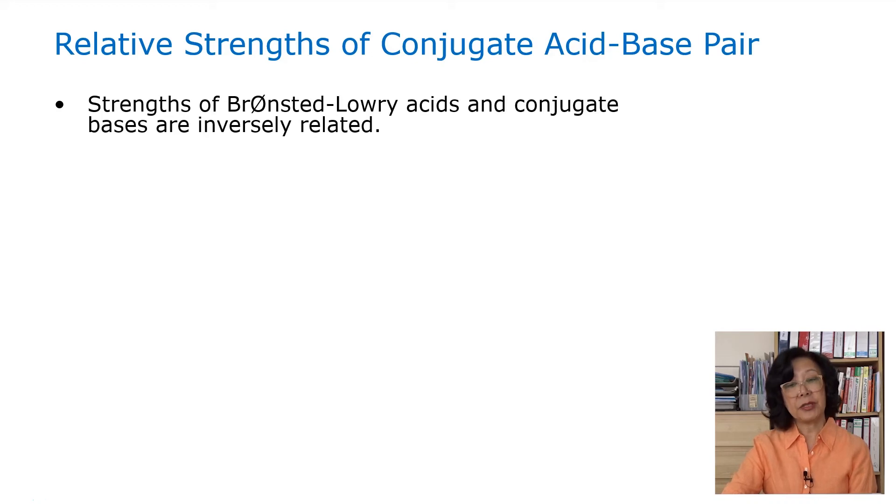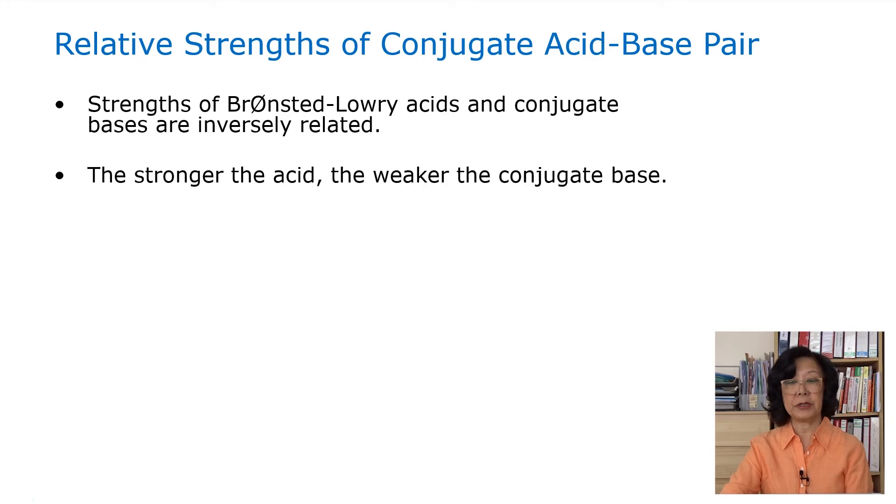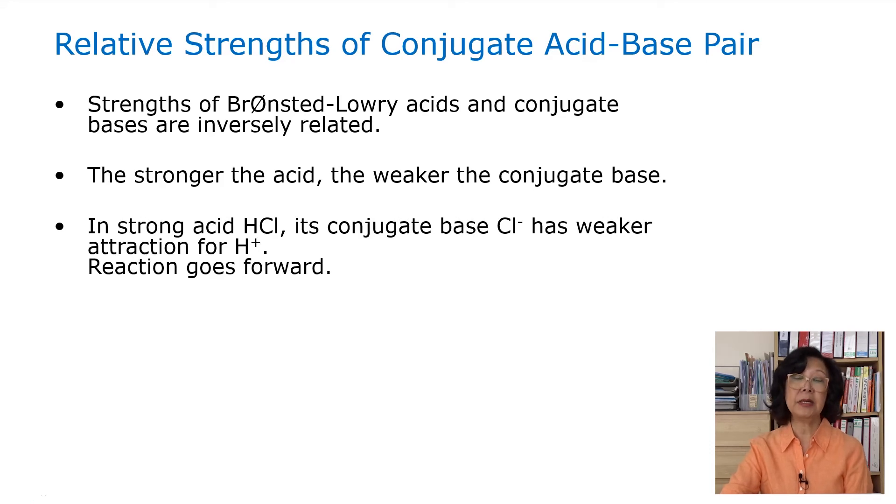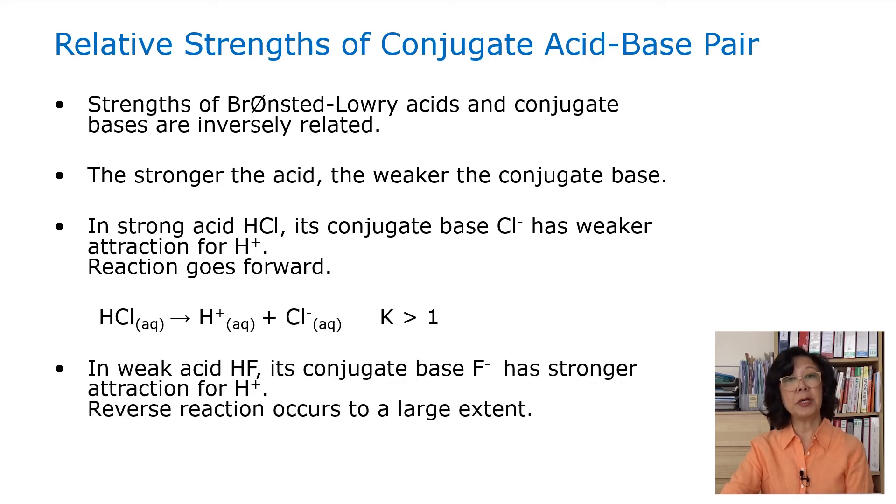The strength of Bronsted-Lowry acids and conjugate bases are inversely related. For example, the stronger the acid, the weaker the conjugate base. Take hydrochloric acid. The conjugate base is chloride, which has a weaker attraction for the hydrogen ion. Therefore, the reaction goes forward, and the equilibrium constant is greater than 1. In a weak acid such as HF, the conjugate base is F-, it has a stronger attraction for the hydrogen ion. Therefore, the reverse reaction will occur to a large extent, and the equilibrium constant will be less than 1.